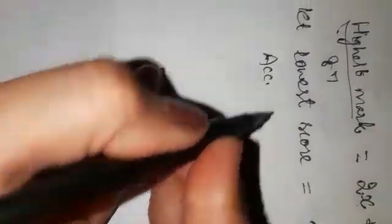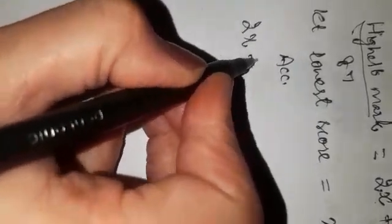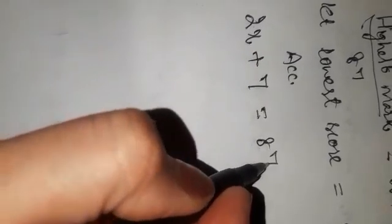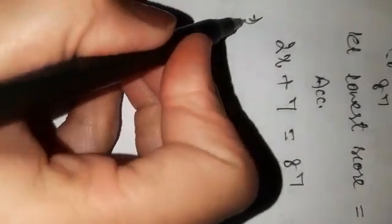According to the question, twice the lowest score plus 7 are highest marks which equals 87. Now solving this equation step by step, you will find the value of X, where X denotes the lowest marks.